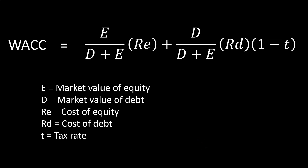Here we are looking at the weighted average cost of capital — the WACC formula — which we looked at in detail in a prior presentation. Now we're going to focus on components of that formula, drilling down into how we would get to particular components, this time focusing in on the cost of debt.